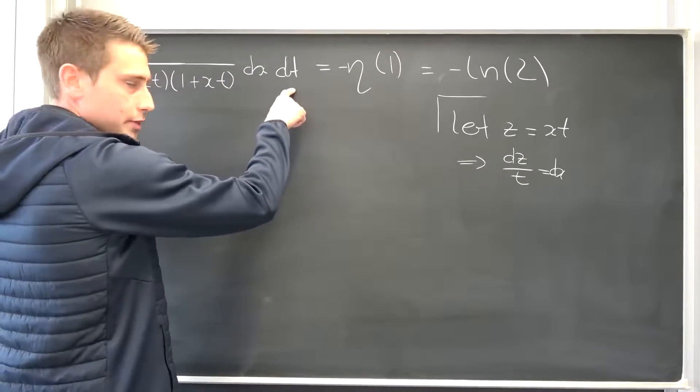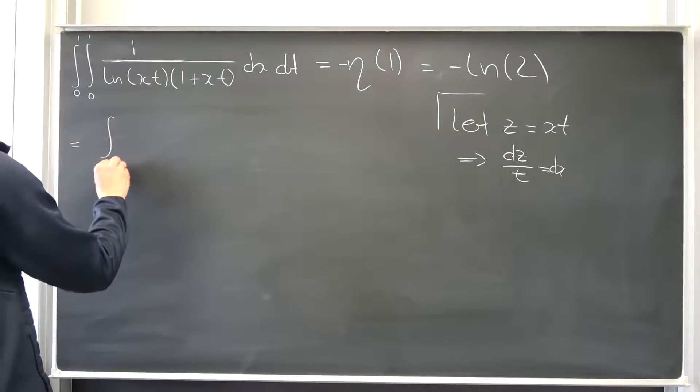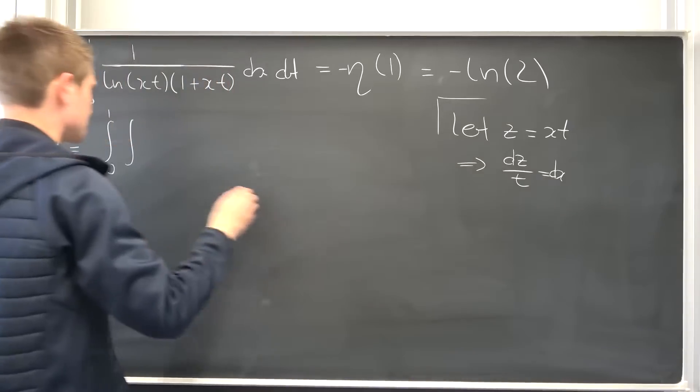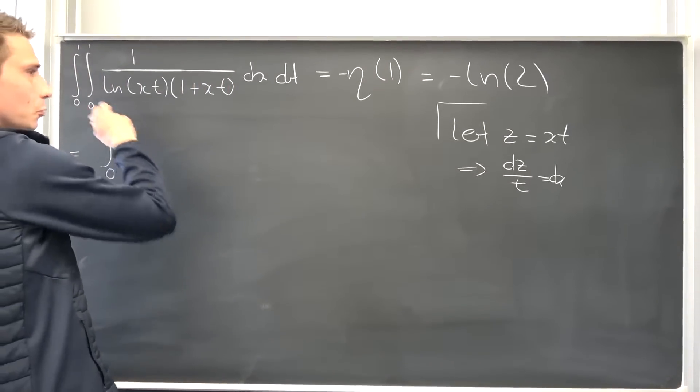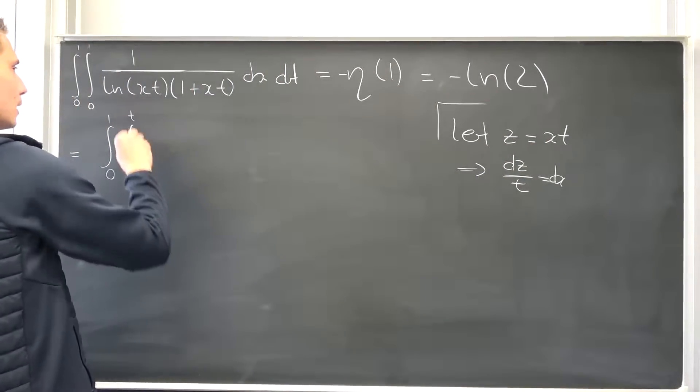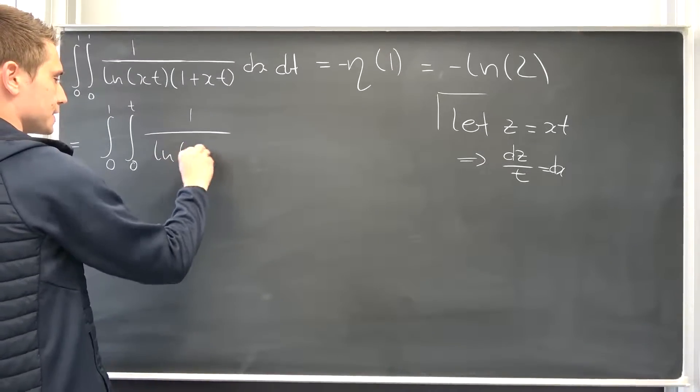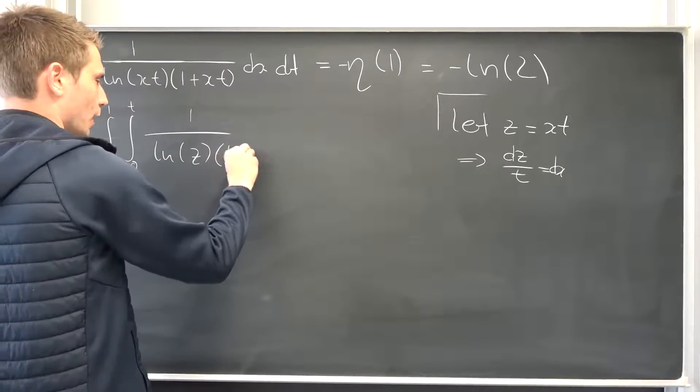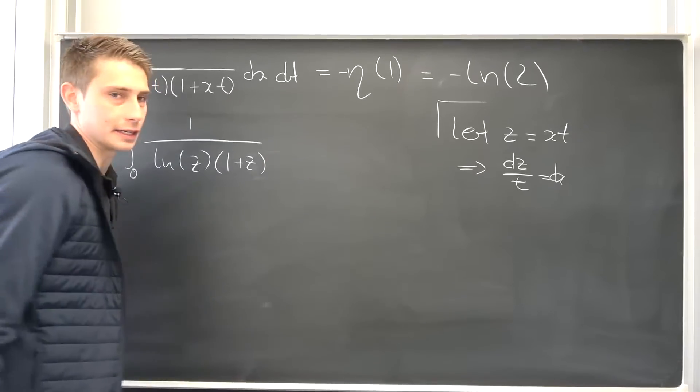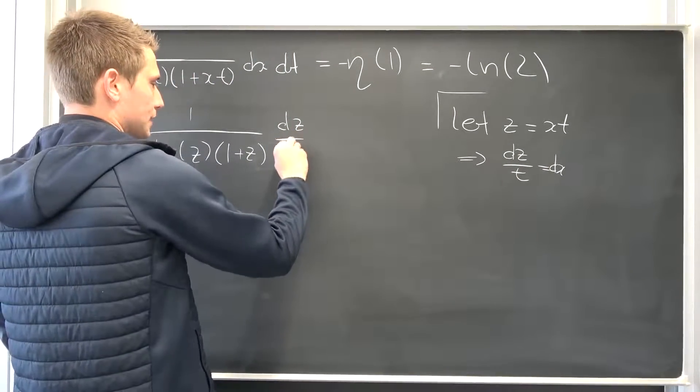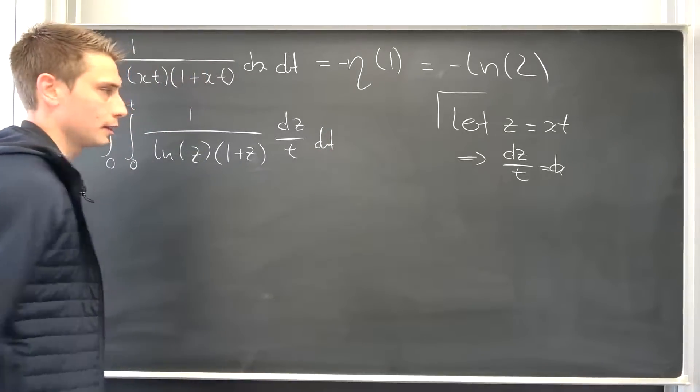On our outer integral nothing's going to change, so there's still the integral from 0 to 1 right here. If we plug 0 into x, this is going to give us z being equal to 0. If we plug 1 in here, that gives us z being equal to t. On the other hand, we have 1 over the natural log of z times 1 plus z, and then dx was nothing but dz over t times dt.